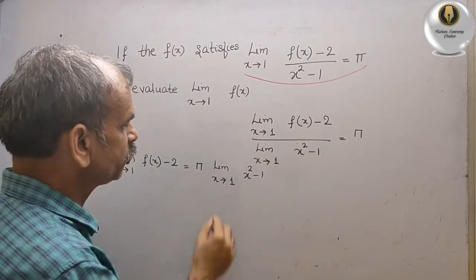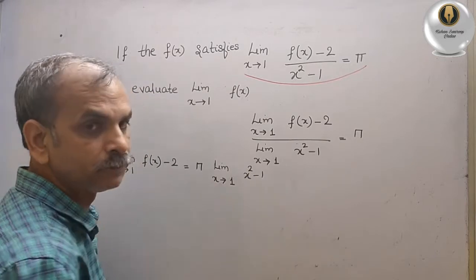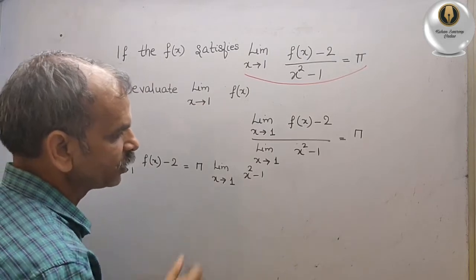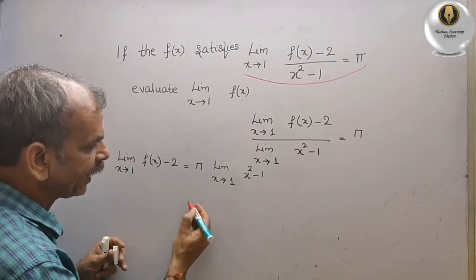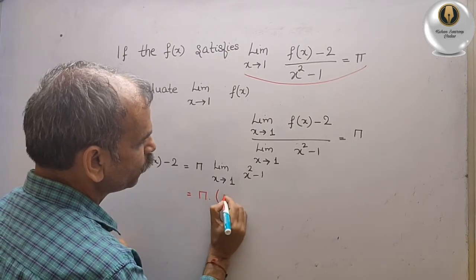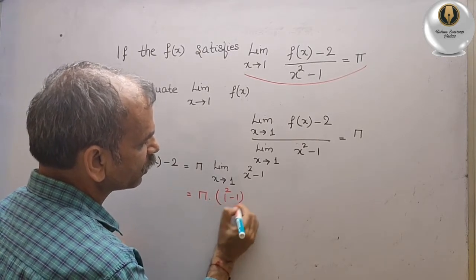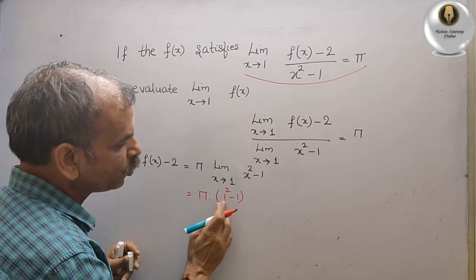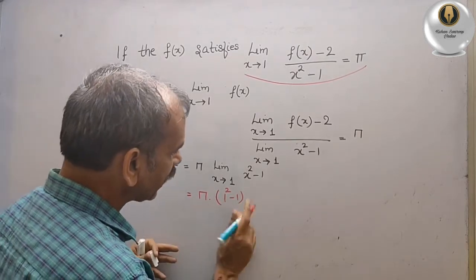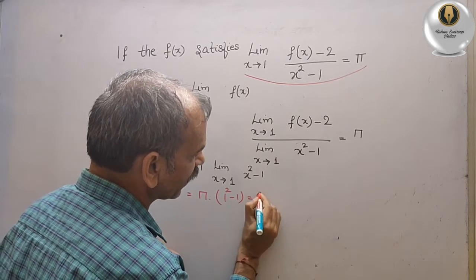Now substitute x value here. Here you can't do anything, just substitute x value here. What we will get? At right side, we will get pi into 1 square minus 1, so pi into 1 square is 1, 1 minus 1 is 0. That means right side you will get as answer as 0.